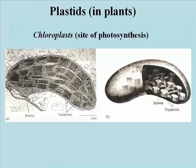Chloroplasts are also organelles surrounded by an inner and an outer membrane. In this case, the inner membrane invaginates — that is, grows inward — to form thylakoids, the stacked membranes seen in these illustrations.